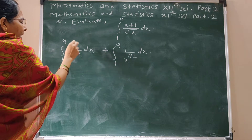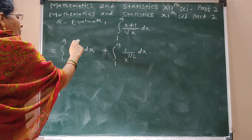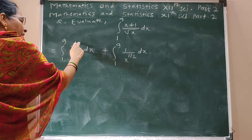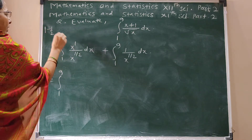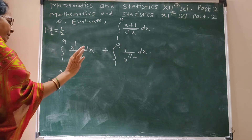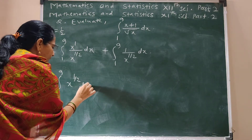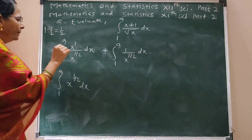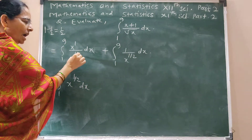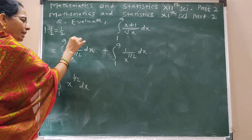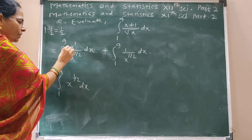Now this x has index 1. This half goes to the numerator, so it becomes 1 minus half, which is half. Finally we have x raised to half. Again, x having index 1, x having index half — it goes to numerator: 1 minus half equals half. So x raised to half.